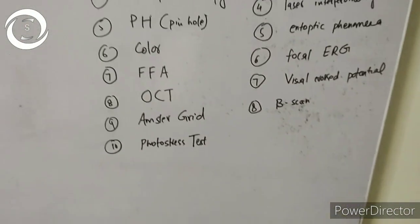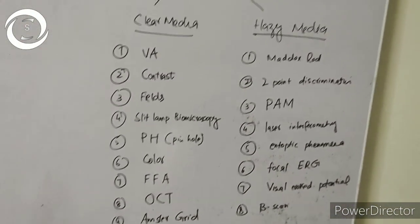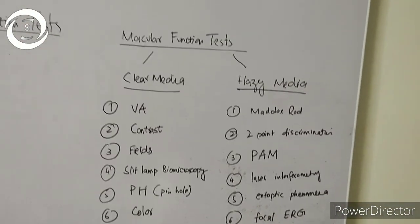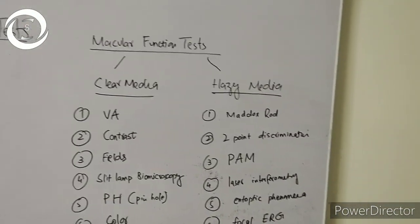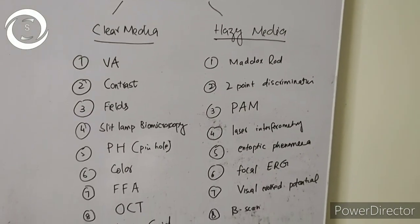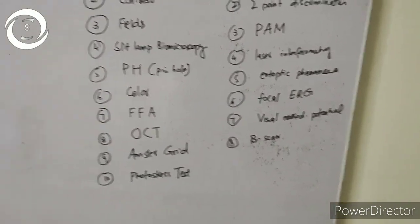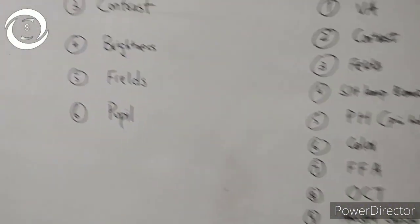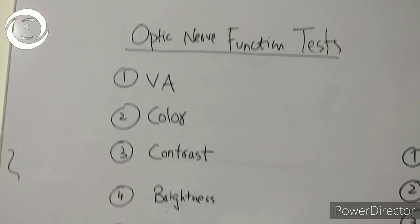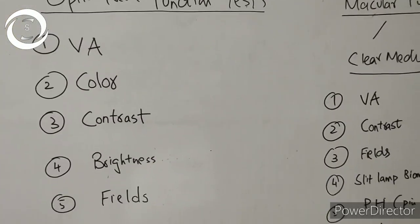To summarize, the optic nerve functions include vision, color vision, contrast, light brightness, visual fields, and pupil reaction. The macular function tests in clear media include vision, contrast, visual fields, slit lamp, pinhole, color, FFA, OCT, Amsler grid, and photo stress. I hope after watching this, your concept about macular and optic nerve functions will be clear. Thank you very much.